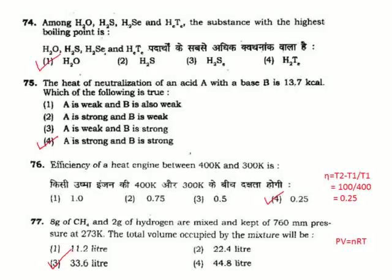Question 77: 8 g of methane and 2 g of hydrogen are mixed and kept at 760 mm pressure at 273 K. The total volume occupied by the mixture — using PV = nRT to calculate the number of moles, the result is 33.6 liters. Option 3.